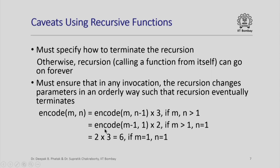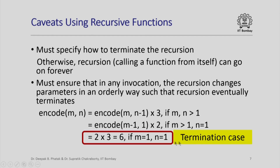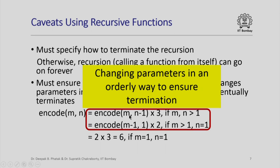In our encode formulation, the termination case is when both m and n are 1 — we do not need to recursively call encode again and can return 6. The recursive part tells us how parameter values change: if both m and n are greater than 1, n is decremented until it reaches 1; when n becomes 1 and m is still greater than 1, m is decremented until both m and n become 1, reaching the termination case. So it is very important to change the parameters in an orderly way to ensure termination.